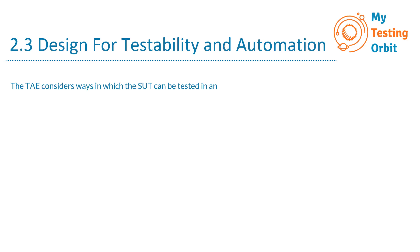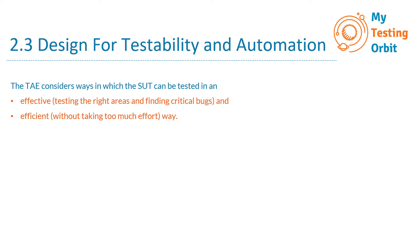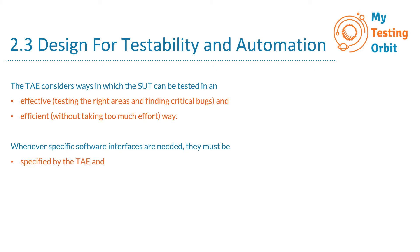The test automation engineer considers ways in which the SUT can be tested in an effective way — testing the right areas and finding critical bugs — and in an efficient way, without taking too much effort. Whenever specific software interfaces are needed, they must be specified by the test automation engineer and implemented by the developer. Whenever a TAE identifies that testing specific features requires particular interfaces, those need to be identified and specified by the TAE, then implemented by the developer.